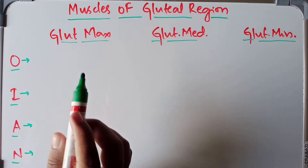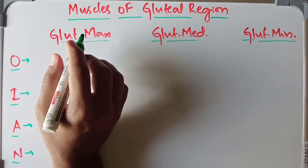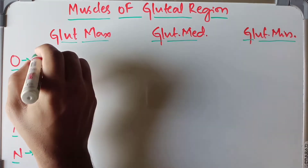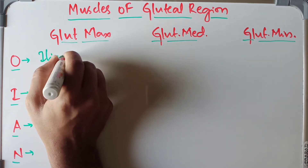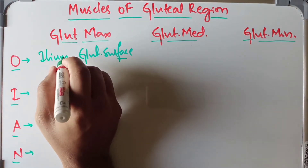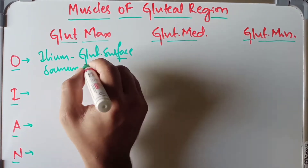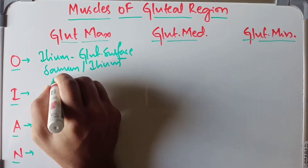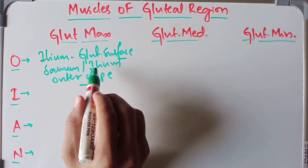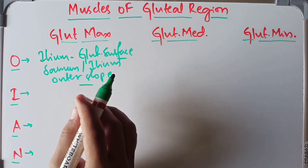Now let's discuss the gluteus maximus. It is a quadrilateral muscle. Its origin comes from the gluteal surface of the ilium, the outer slope of the ilium, and the dorsal surfaces of the sacrum and ilium. Key points to remember: gluteal surface of the ilium, outer slope of the ilium, and the backward surface of the sacrum.